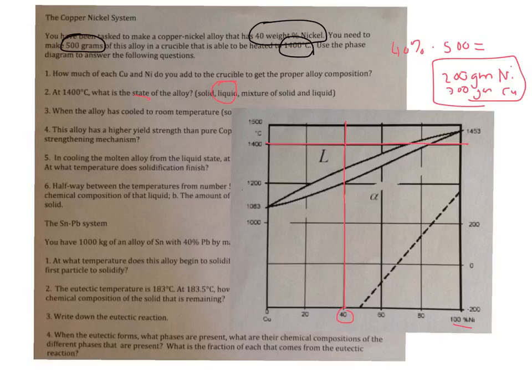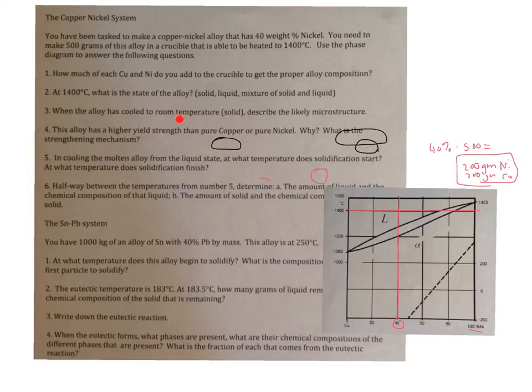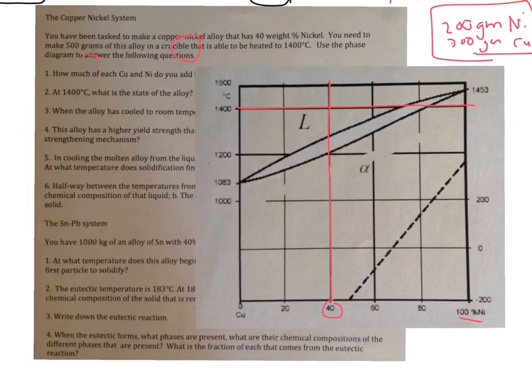Then the next question, and I'm going to have to move the phase diagram here. When the alloy is cooled to room temperature, describe the likely microstructure. Well, what we can see from this phase diagram is that down at room temperature, this indicates that there's a single phase alpha. So we're likely to have a single phase alpha microstructure. And if any of you happen to know, copper is one of those soft metals. It's FCC. Nickel also is FCC. So you're likely to have a face-centered cubic, a polycrystalline phase, one single solid solution.